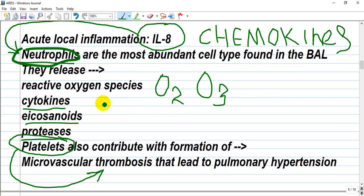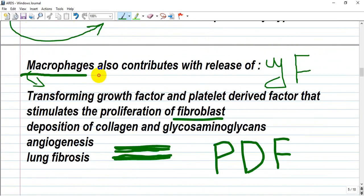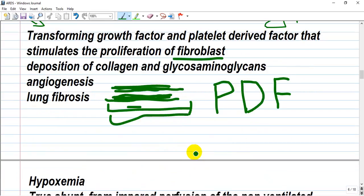Cytokines: what represents cytokines? They are secreted by immune cells like neutrophils and can affect other cells. Also, platelets contribute to the formation of microvascular thrombosis that leads to pulmonary hypertension. Macrophages participate by contributing with releasing of growth factors, transforming growth factor and platelet-derived factor that stimulate proliferation of fibroblasts, deposition of collagen and glycosaminoglycans. So here we have angiogenesis and lung fibrosis, especially from vessels. If vessels are affected, parenchyma or nearby tissue like interstitium and alveoli will also follow with fibrosis. It's a generalized fibrosis, not reversible at all.